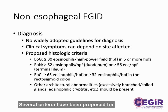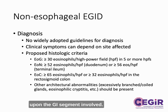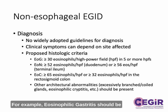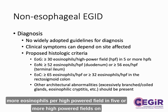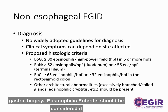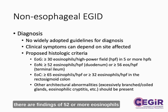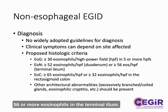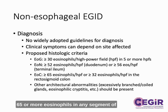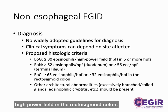Several criteria have been proposed for histological diagnosis of these disorders based upon the GI segment involved. For example, eosinophilic gastritis should be considered if there are 30 or more eosinophils per high-powered field in 5 or more high-powered fields on gastric biopsy. Eosinophilic enteritis should be considered if there are findings of 52 or more eosinophils per high-powered field in the duodenum, or 56 or more eosinophils in the terminal ileum. Eosinophilic colitis can be diagnosed if there are 65 or more eosinophils in any segment of the colon, or 32 or more eosinophils per high-powered field in the rectosigmoid colon.